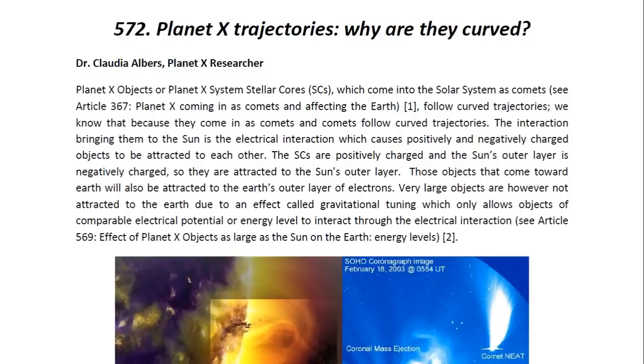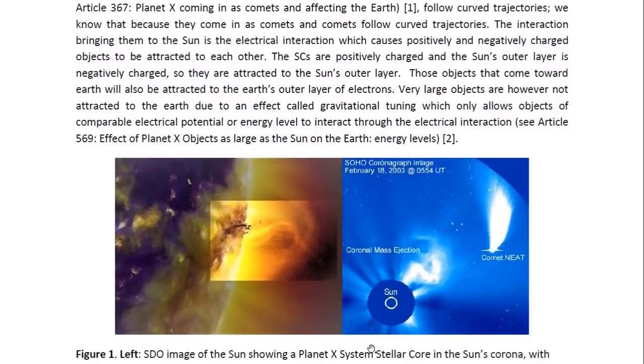Those objects that come toward Earth will also be attracted to the Earth's outer layer of electrons. Very large objects are, however, not attracted to the Earth due to an effect called gravitational tuning, which only allows objects of comparable electrical potential or energy level to interact through the electrical interaction. See Article 569, Effect of Planet X Objects as Large as the Sun on the Earth, Energy Levels.